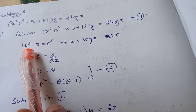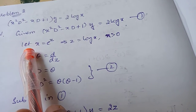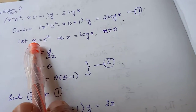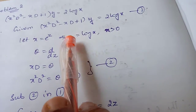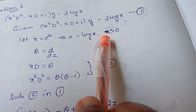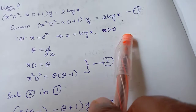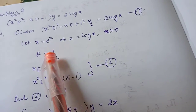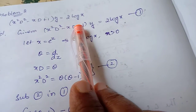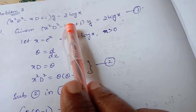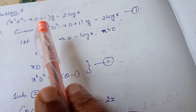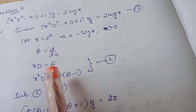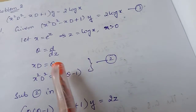We are using Euler's-Cauchy equation. So we have to substitute x equal to e power z, or we can write z equal to log x, where x is a positive value. We take theta as d by dz. In place of xD we substitute theta, and in place of x squared D squared we substitute theta into theta minus 1.